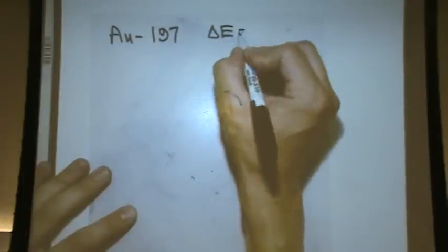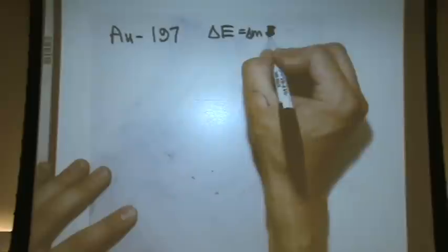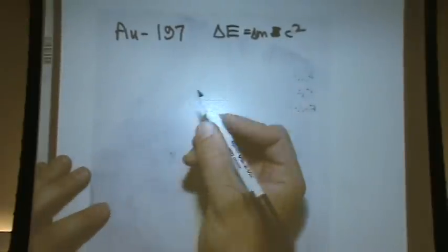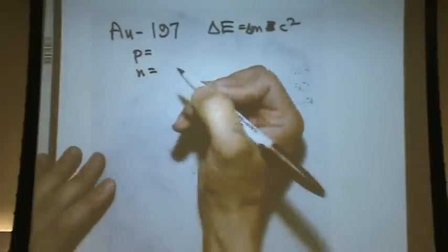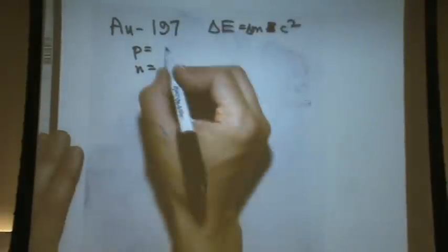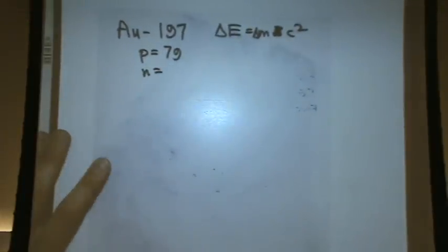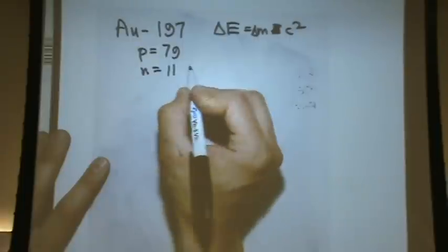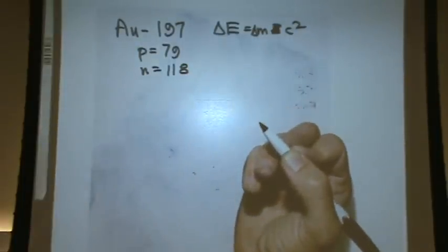We're going to use energy equals MC squared. Good change here. Equals MC squared. And then first we have to write the reaction. So I need the number of protons and neutrons. How many protons? 79. And how many neutrons? 118? Okay.